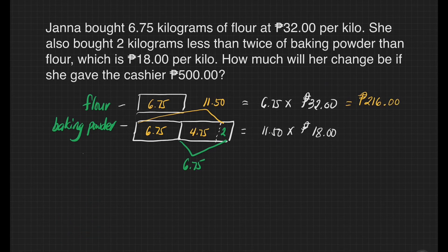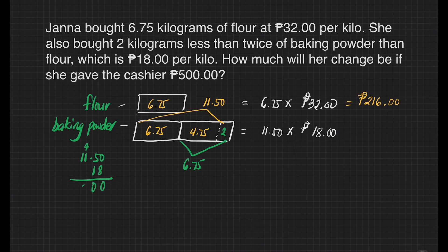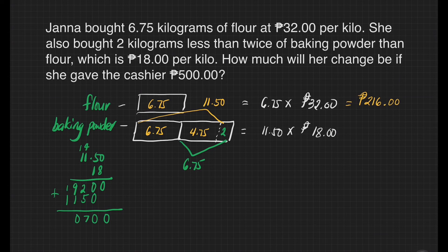Now let's multiply eleven and fifty hundredths by eighteen. Eight times zero is zero. Eight times five is forty — write zero, carry one. Eight times one is eight plus four is twelve — write two, carry one. Eight times one is eight plus one is nine. Then: one times zero is zero, one times five is five, one times one is one, one times one is one. Adding: bring down zero, zero, two plus five is seven, nine plus one is ten — carry one, one plus one is two. Janna spent 207 pesos for the baking powder.